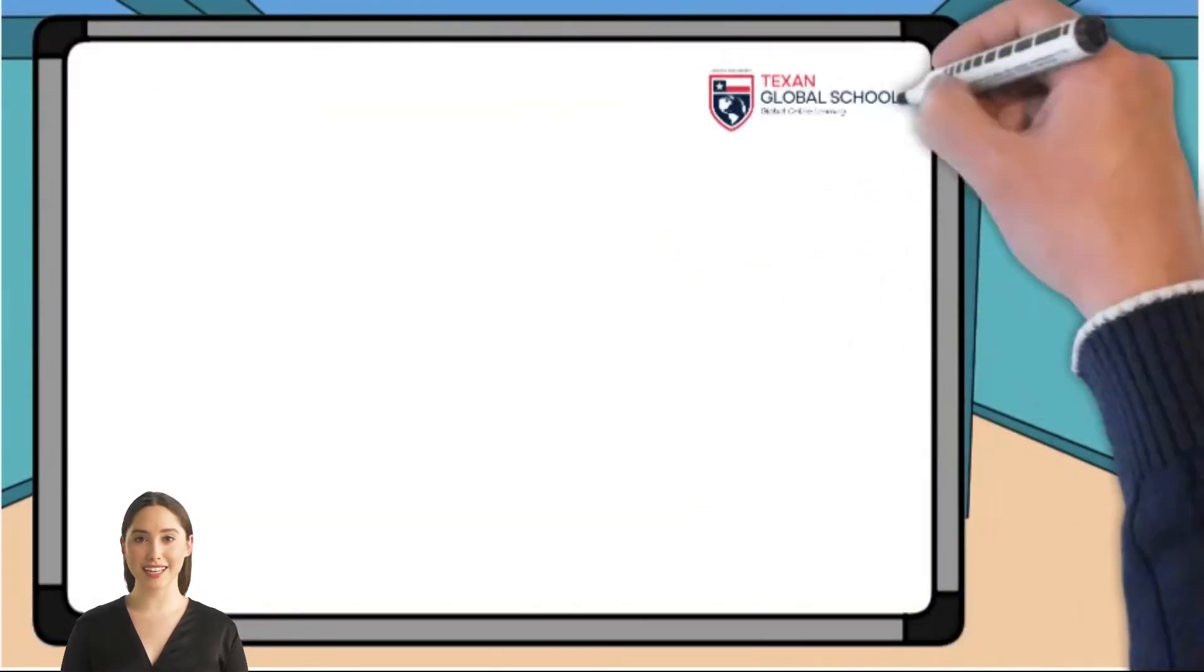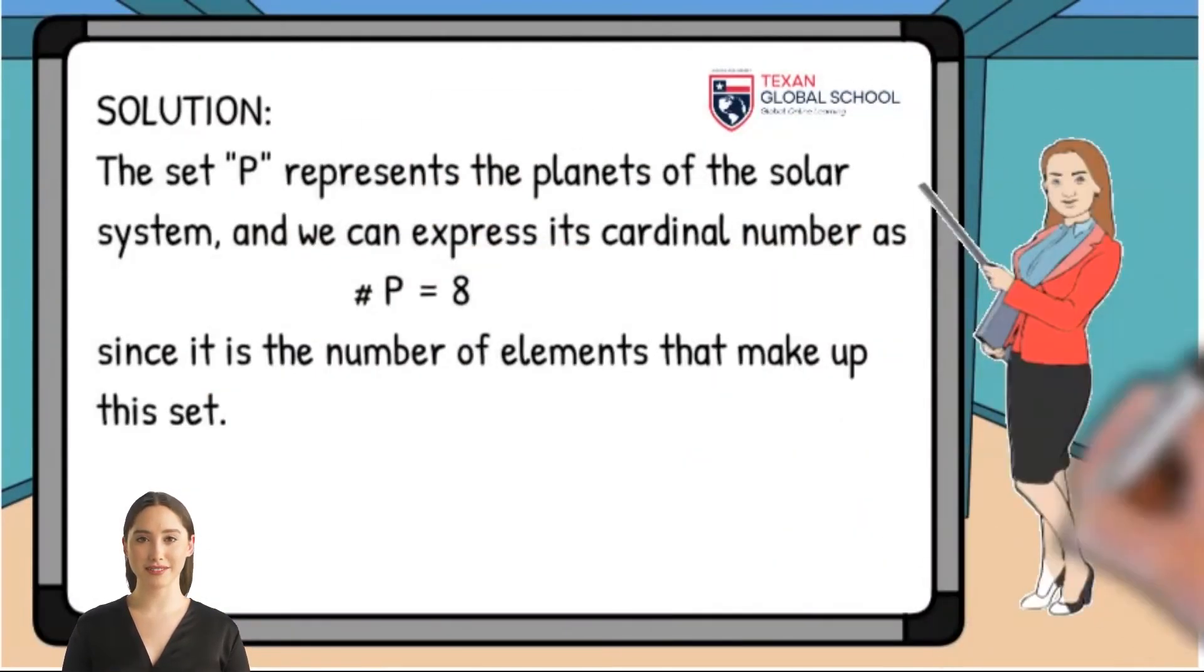In conclusion, the cardinality of a set is the number of its elements. If a set lacks elements, its cardinal number is 0.